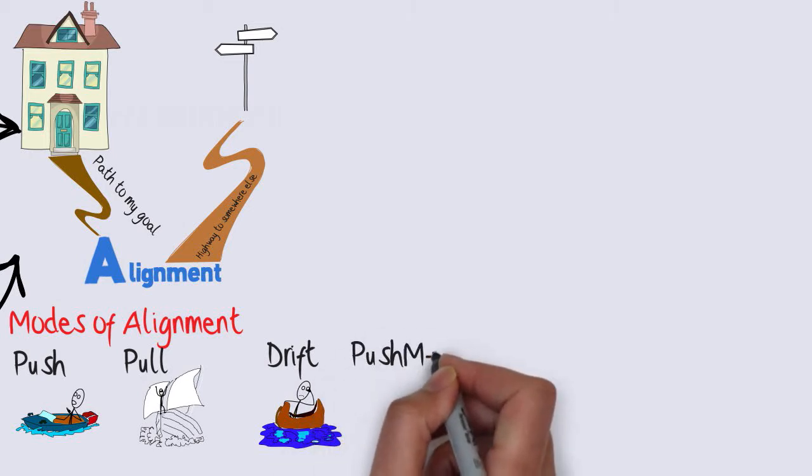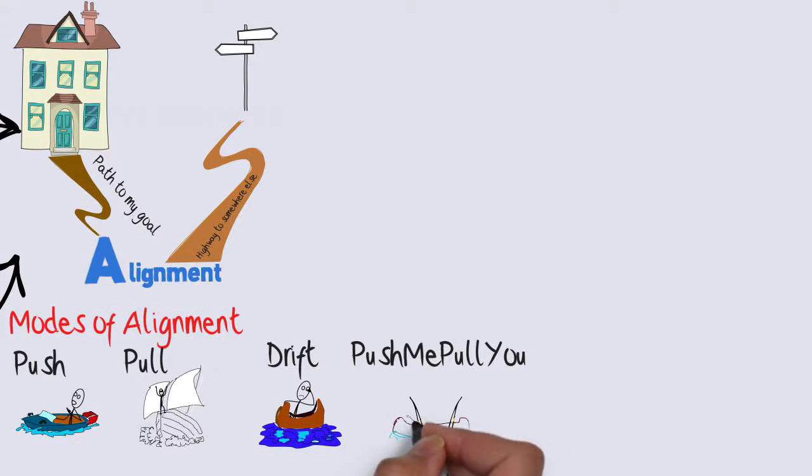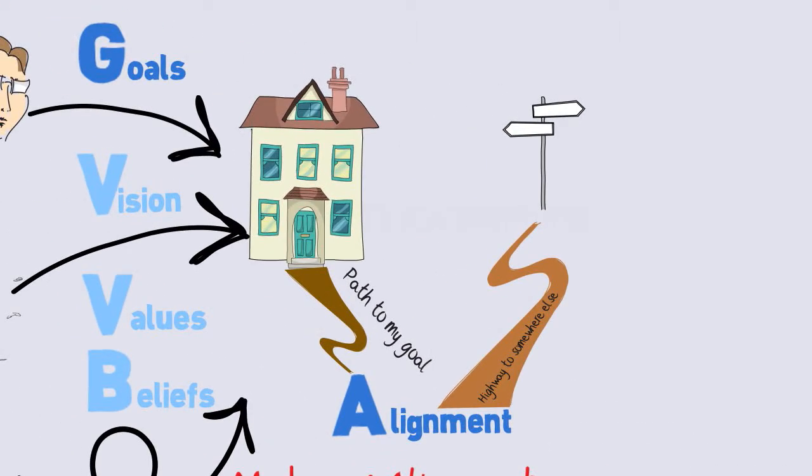The fourth mode is the Push-Me-Pull-You mode. Like the mythical creature from Dr. Dolittle, this mode tries pushing in one direction while simultaneously being pulled in another. People in this mode of alignment are often paralyzed and unable to make suitable choices to align themselves on the right path to achieve their own goal.